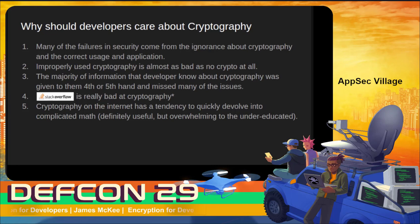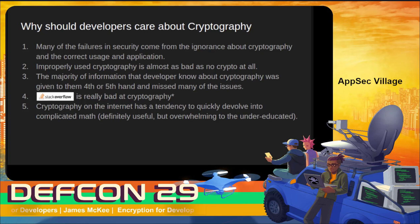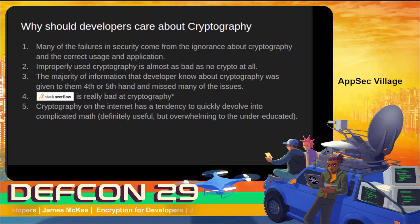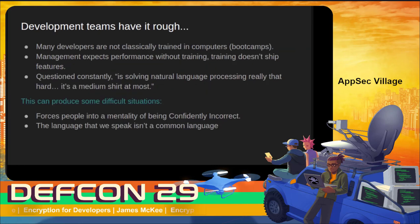The information that gets to developers about cryptography and cyber security can sometimes be translated through four or five different people before it actually reaches them, so you have instances where people are living off of tribal knowledge. If they don't know how to handle something, almost certainly one of the first stops is to copy and paste something from Stack Overflow. Stack Overflow is pretty bad at giving security advice, especially around cryptography. Even if they end up on crypto.stackexchange, the internet is filled with information that can quickly devolve into really complicated math that may just be overwhelming.